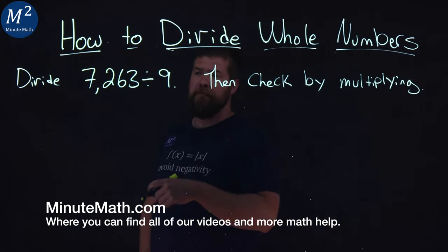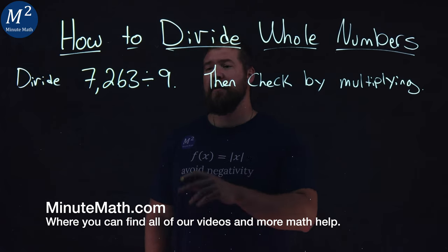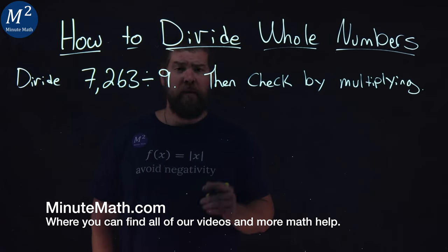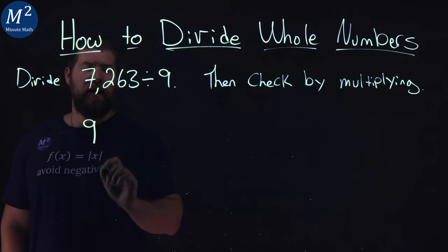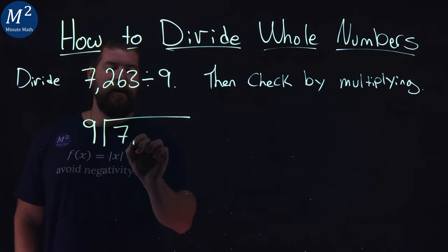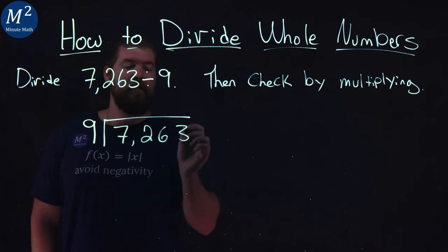We're given this problem right here. Divide 7,263 by 9. I'm going to check by multiplying. We can apply some long division here. So I'm going to set up a 9 here and it goes into my 7,263.